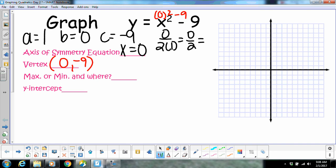Okay, was A positive or negative? A was positive, so it's going to open up. So that makes it a min, and the min would be at negative 9. That's always the Y value.